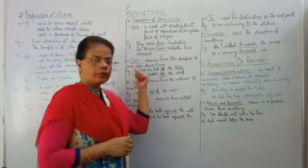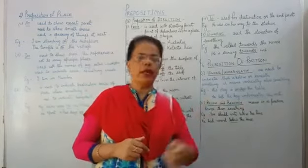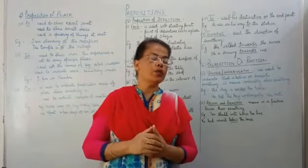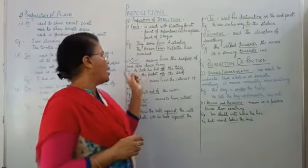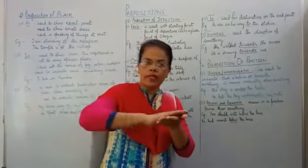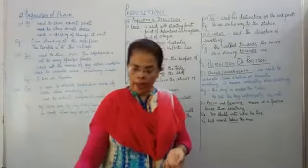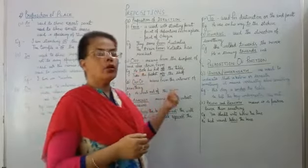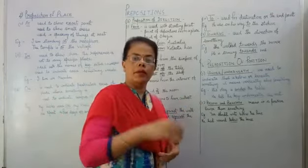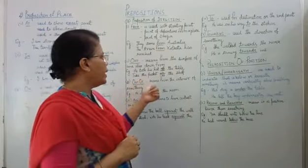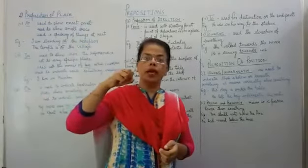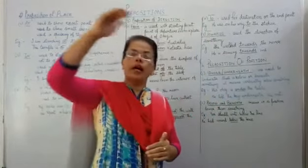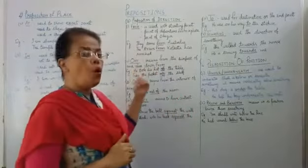Now 'off' — I am talking about the preposition of place and direction. 'Off' is indicating from the surface, and also 'down from'. Removing something from a surface — that is 'off'. Example: He took his hat off the table — usne table se apna hat hataya. Take the packet off the shelf — shelf se neeche utaarna. Down from the shelf. That is O-F-F.